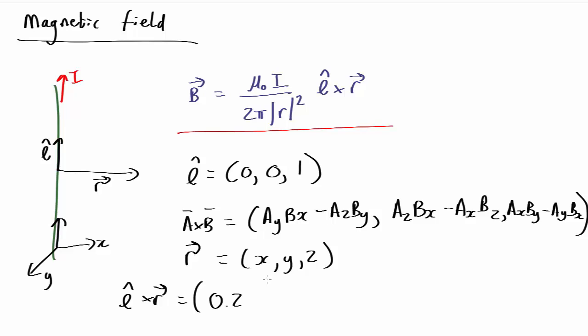minus the z component of L, which is 1, times the y component of r, which is y.